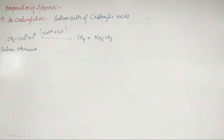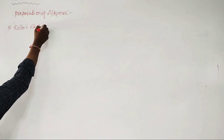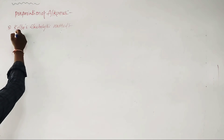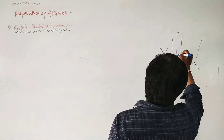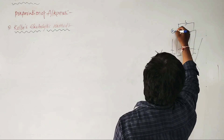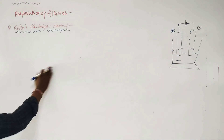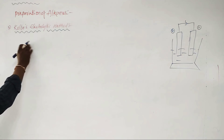The next method is Kolbe's electrolytic method — an electrolytic method. In electrolysis, there is an anode, a cathode, and an electrolytic solution connected to a battery. The positive electrode is the anode and the negative electrode is the cathode. The Kolbe electrolysis reaction is carried out using aqueous solutions of sodium or potassium salts of carboxylic acids.